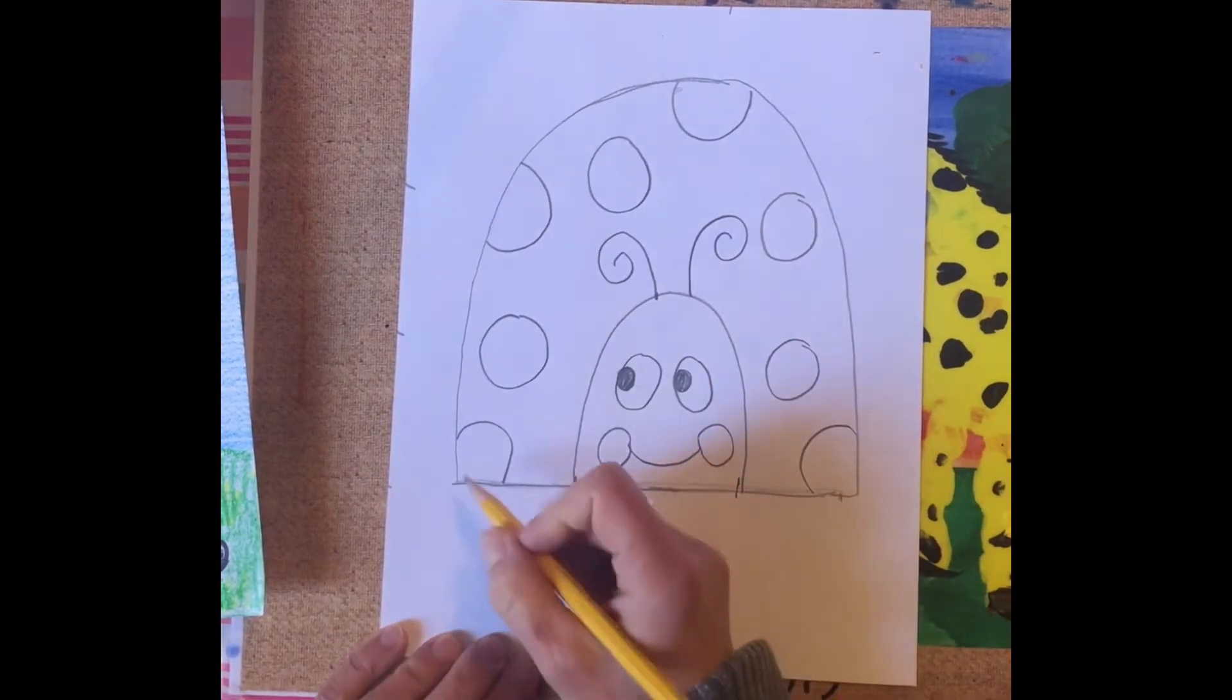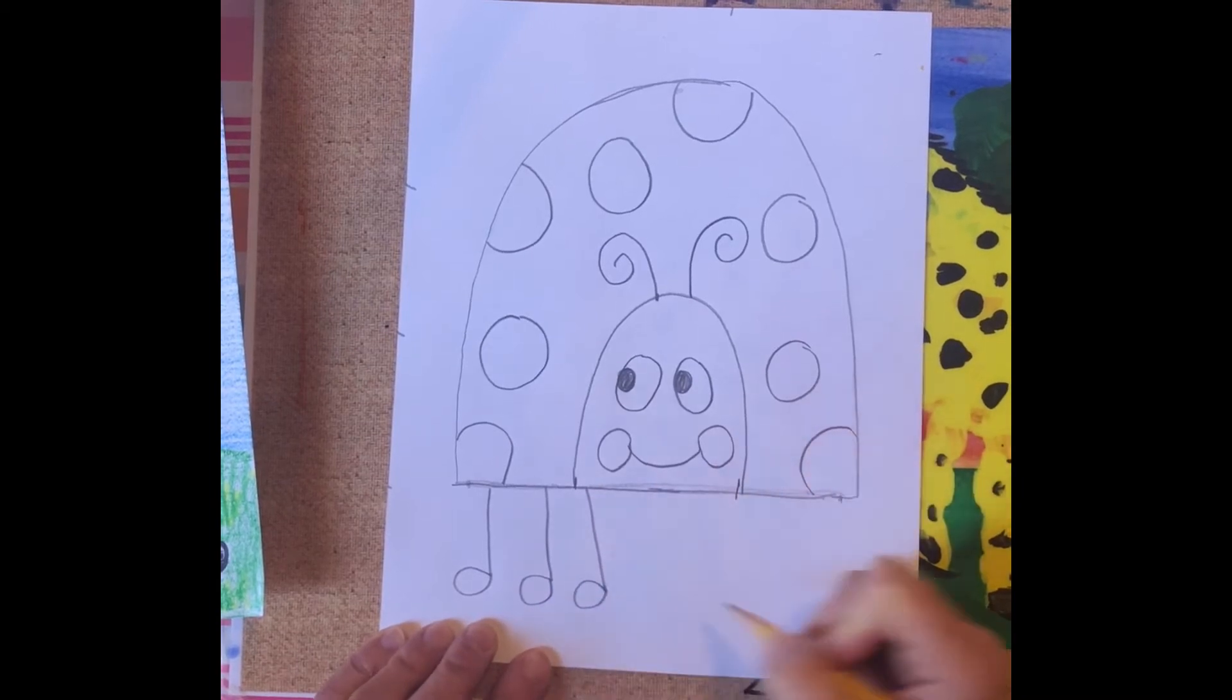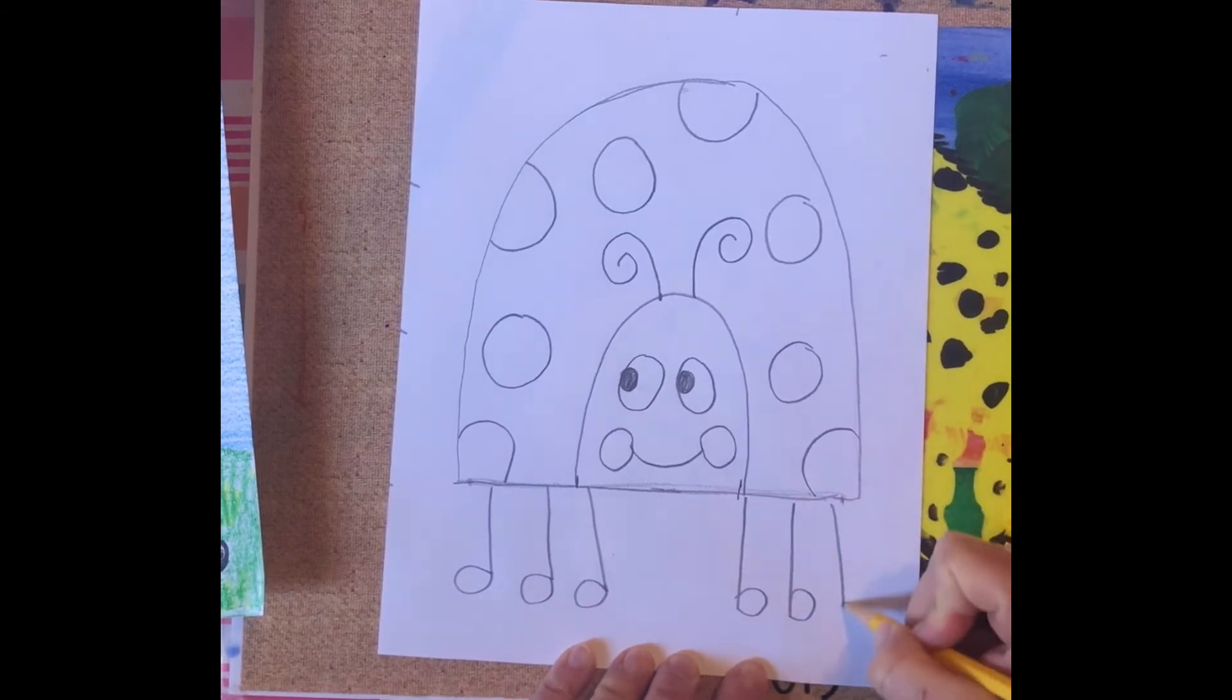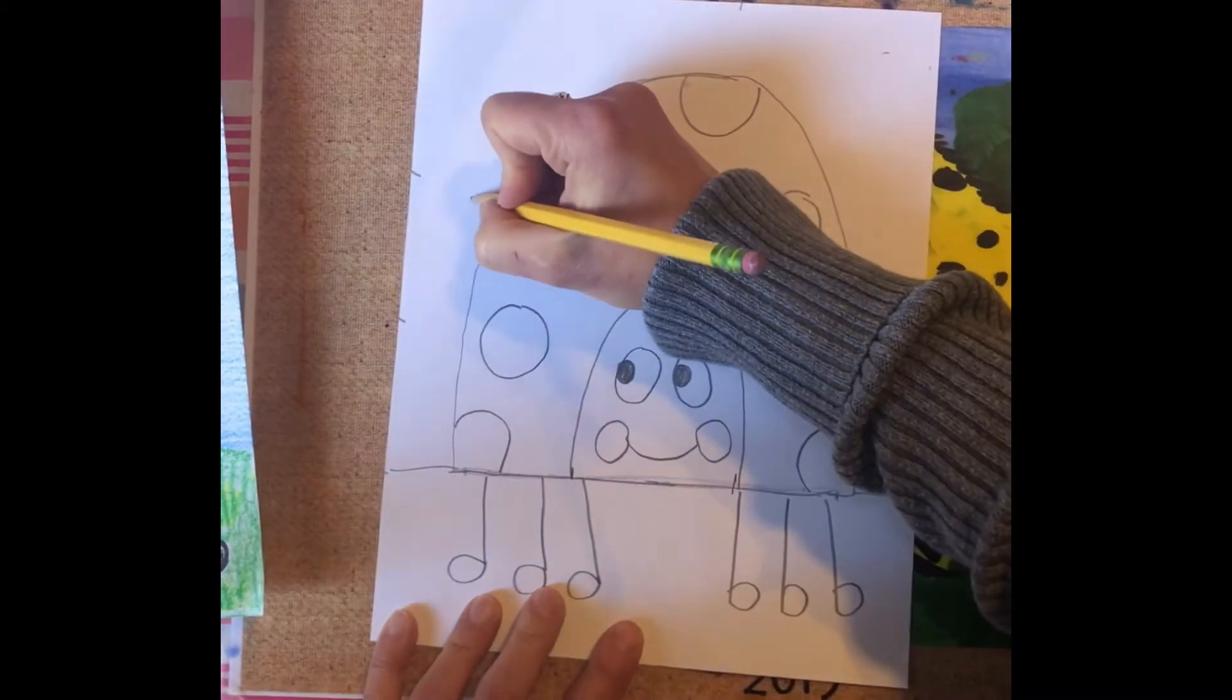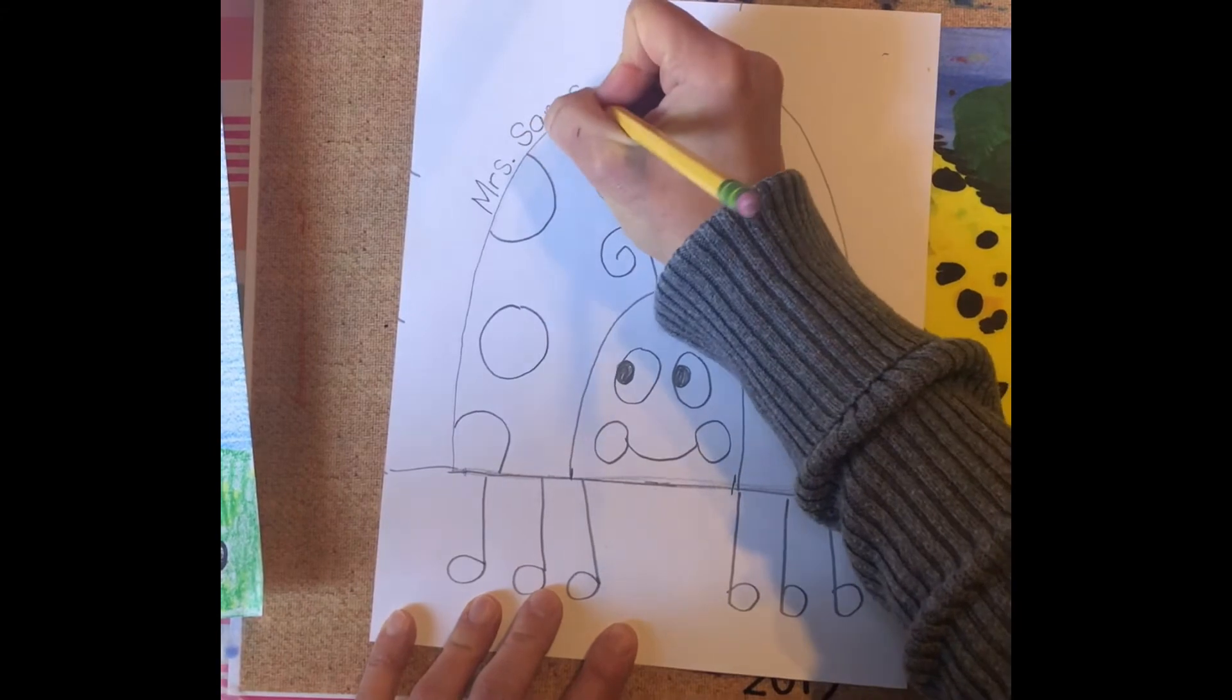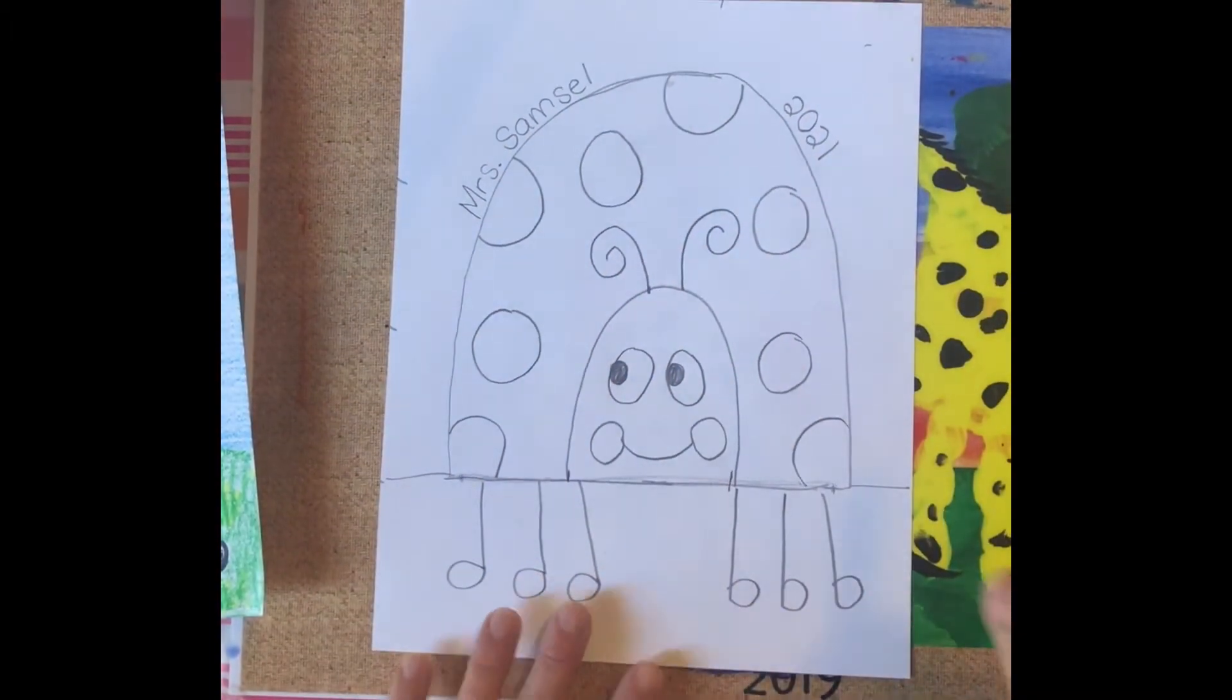Now down below I'm gonna add my feet. I have one, two, three ladybug feet, one, two, three ladybug feet. And then over here is gonna be the grass and then the sky. I'm gonna write my name along the ladybug body and the year that I made this on the other side of my ladybug body, which is 2021. Now I can outline in sharpie, come back and we'll color it.